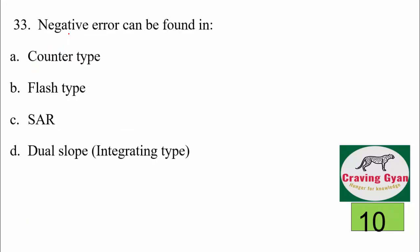33rd question: negative error can be found in which type — counter type, flash type, successive approximation register, or dual slope? Error is the difference between the true value and measured value. In the case of counter type, the error is negative, meaning the measured value may exceed the true value. Hence the suitable option is counter type.